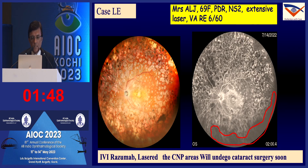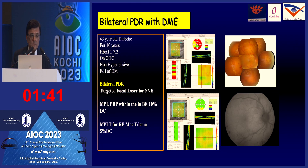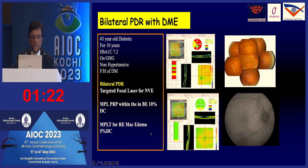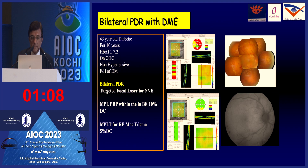For a patient with an entirely diabetic family, micropulse PRP was chosen to preserve visual field. Targeted focal laser was applied to NVEs, micropulse PRP was performed and repeated every six to eight months. Over two and a half years of follow-up, field has been maintained and no hemorrhage has occurred beyond one treated NVE. This technique may help maintain visual field while controlling macular edema, though a larger study is needed.